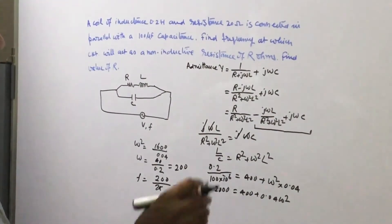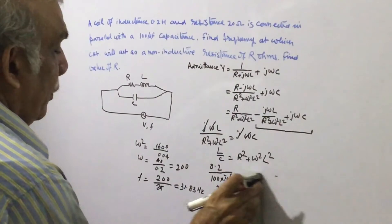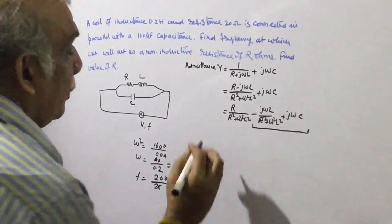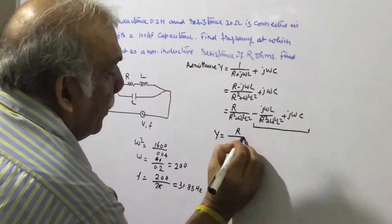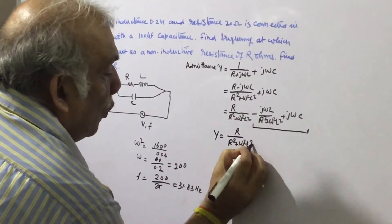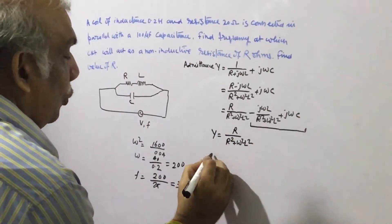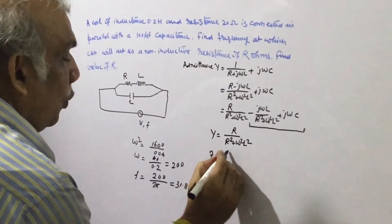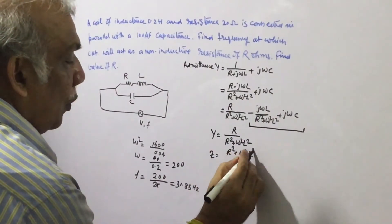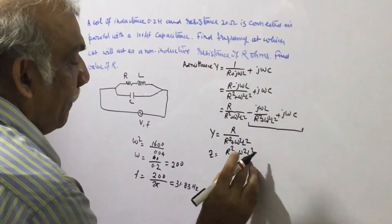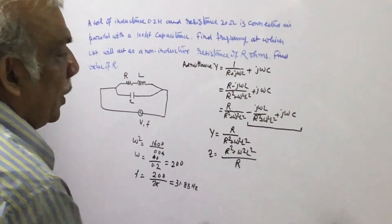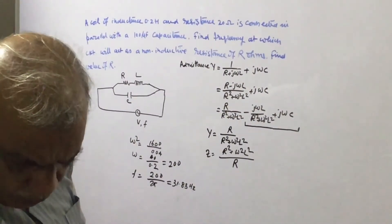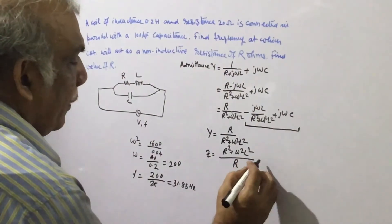See from here we can very easily find it out. At resonance Y is R divided by R square plus omega square L square. So Z will be equal to R square plus omega square L square divided by R and from here we have already got that R square plus omega square L square equals L upon C.